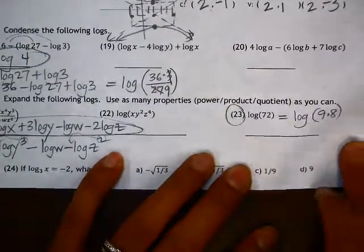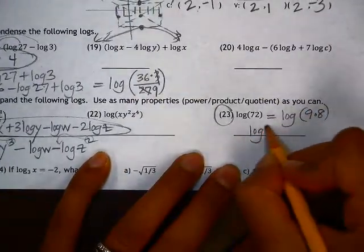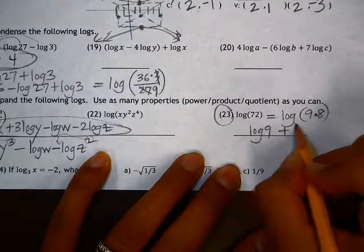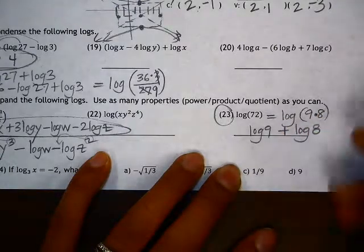If we expanded this out, that would give us log 9 multiplication. When we expand, it turns into addition. So log 9 plus log 8.